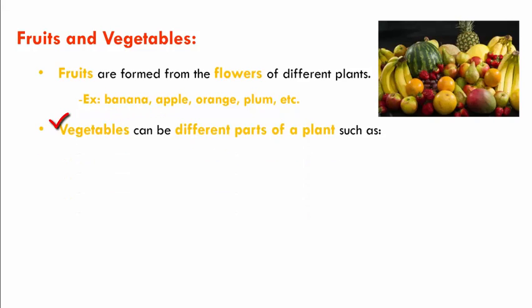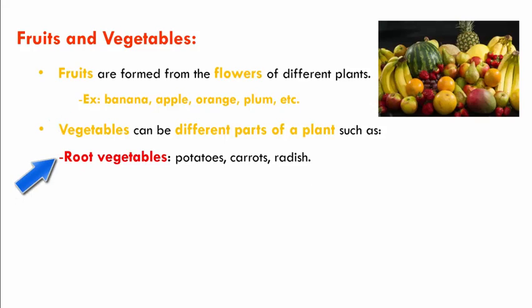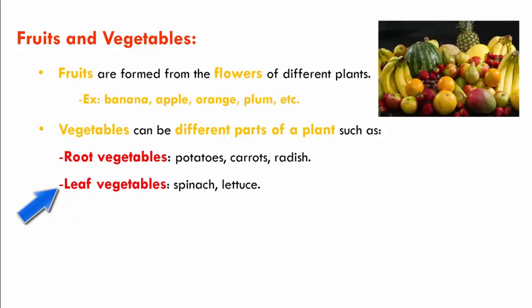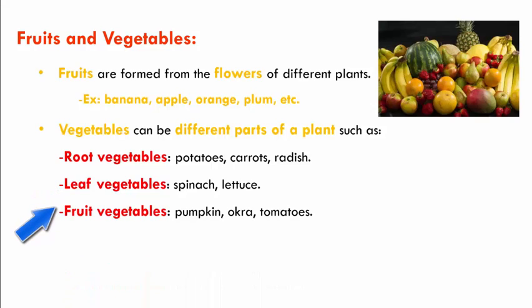Vegetables can be obtained from different parts of a plant, such as root vegetables — for example, potato, carrots, radish. There are leaf vegetables which are spinach and lettuce. The third one is fruit vegetables, which include pumpkin, okra and tomatoes.